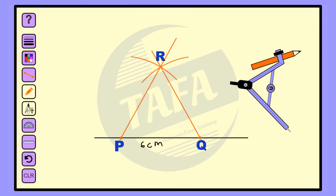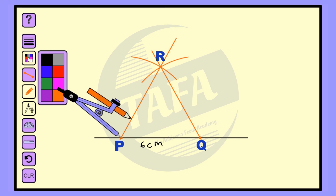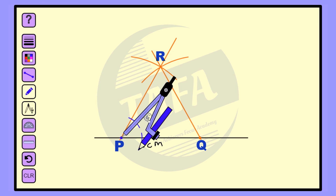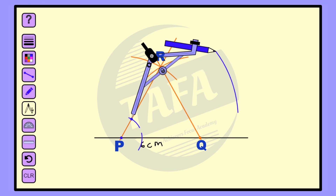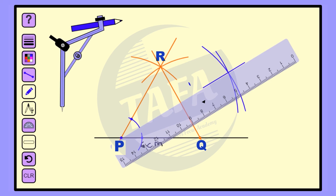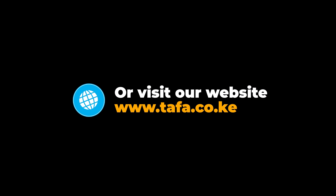The locus we are interested in is the angle bisector locus. We bisect angle RPQ and label that bisector as X.